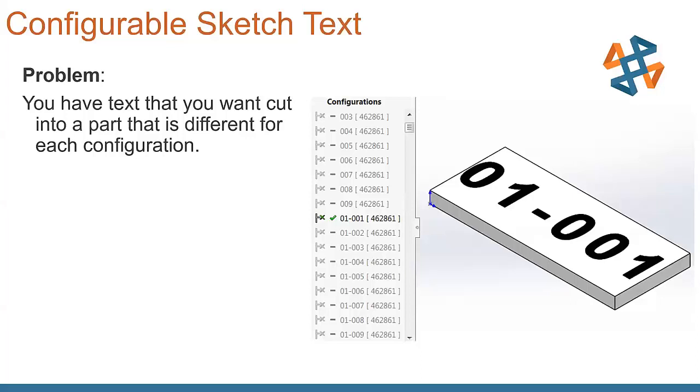Our next item is configurable sketch text. The problem that we're going into here, you have text that you want cut into a part or that is different for each configuration. In this case here, a label with a part number, it's a common problem that people run into. And we want all this stored inside of one file. So how do we do this?